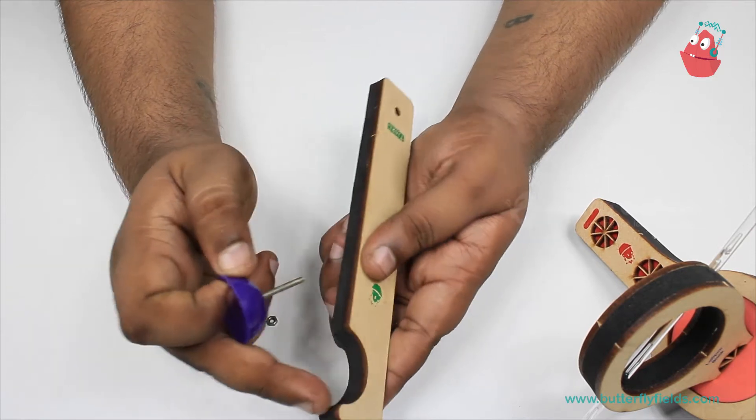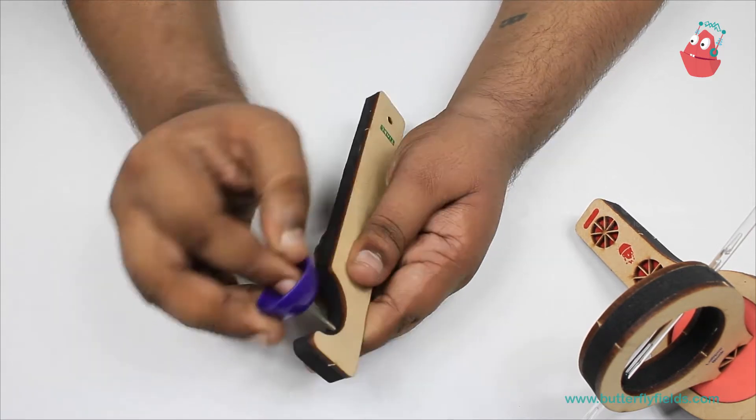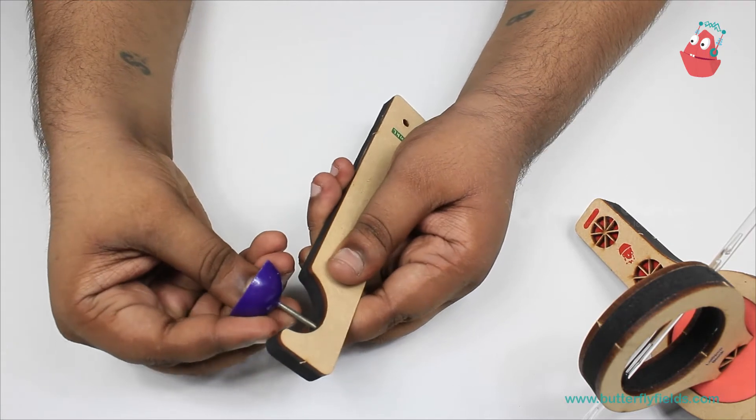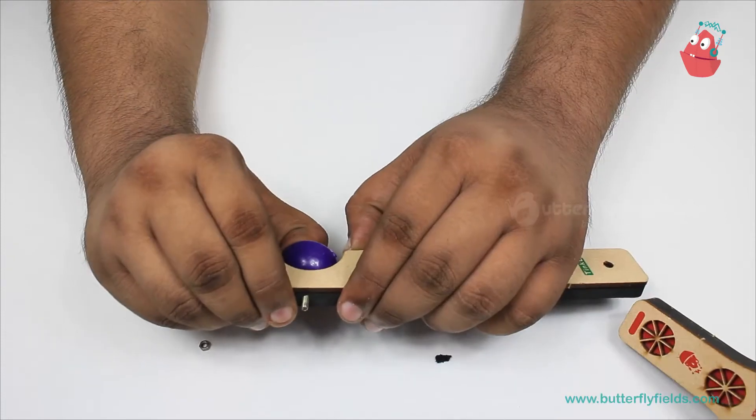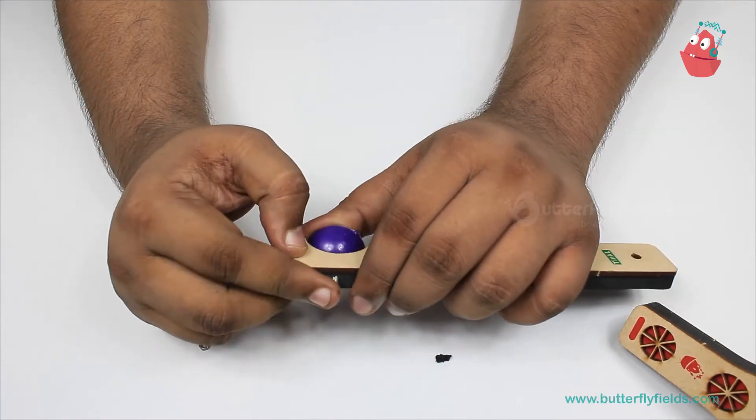To insert here at the center of this curve, make a hole slowly and push it to the other side. Once it comes from the other end, fix the nut.